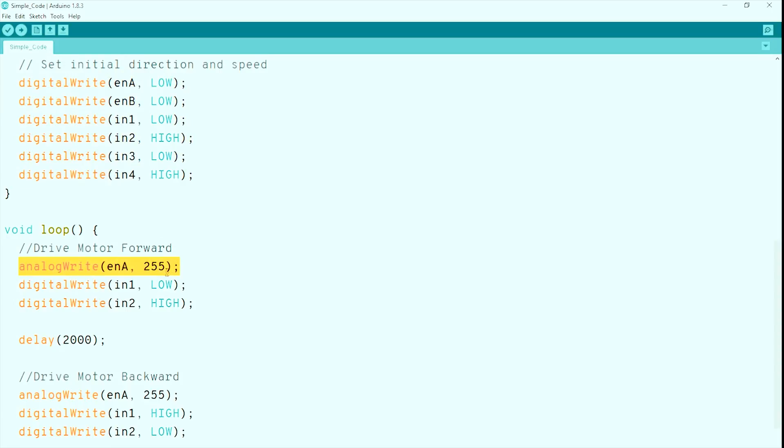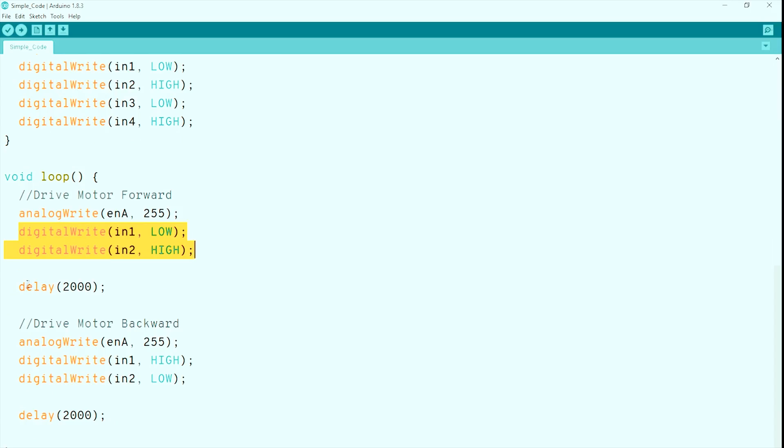In the loop, we can just analog write a PWM value from 0 to 255 to control the speed. The bigger the value, the faster the motor runs. And we also digital write in 1 and 2 to control the motor directions. Don't forget to add a delay in it.